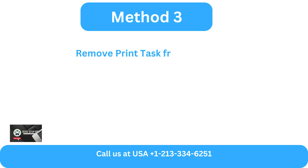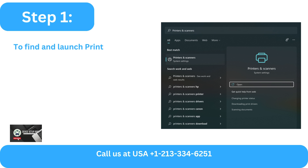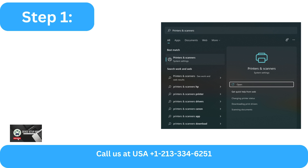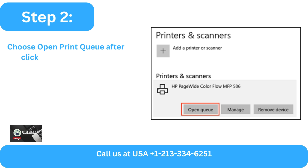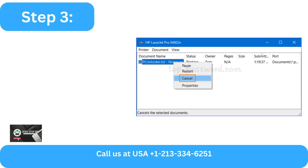Method 3: Remove Print Task from Queue. Step 1 - To find and launch Printers and Scanners, click the Taskbar Search button. Step 2 - Choose Open Print Queue after clicking on your printer. Step 3 - To cancel the print job, right-click it and choose Cancel.